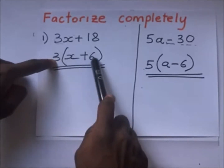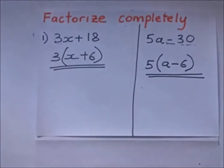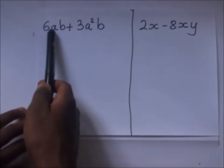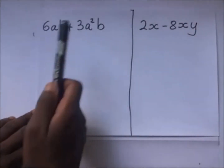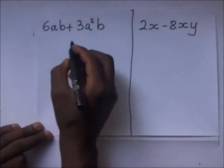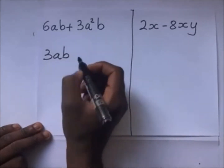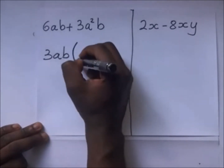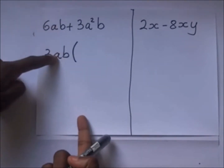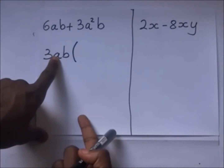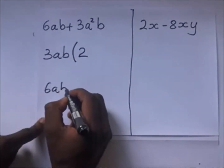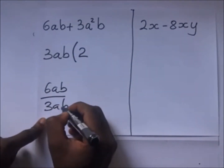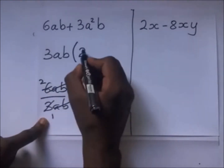We continue with worked examples. We have 6ab plus 3a²b. The common factor between these two terms is 3ab, so you put 3ab outside the brackets. Now 6ab divided by 3ab: the 3s cancel and the ab cancels, giving us 2.